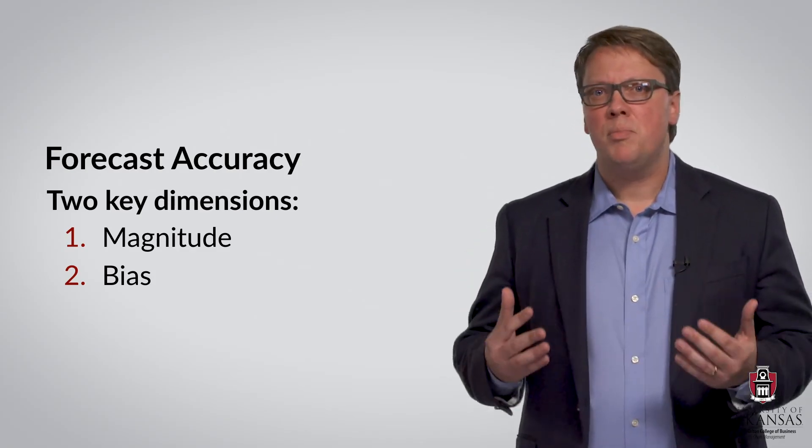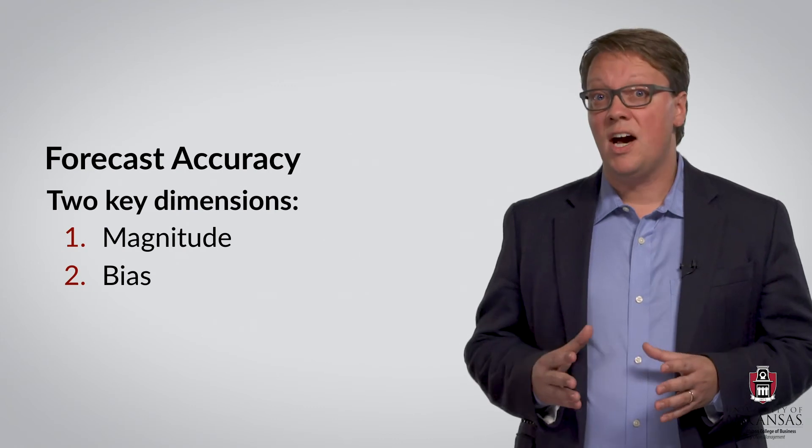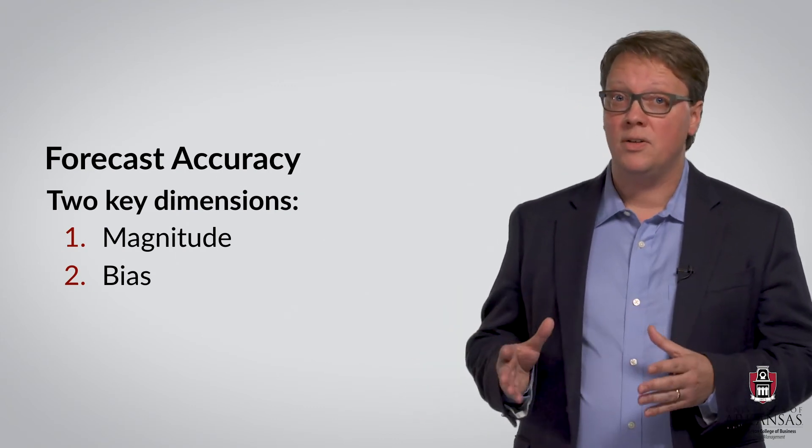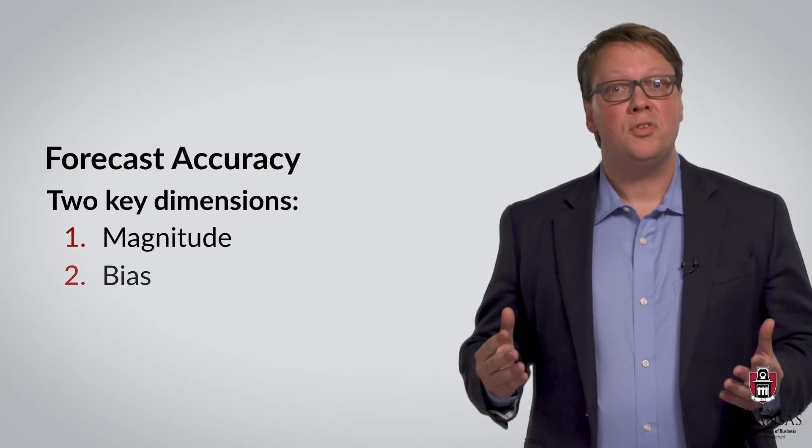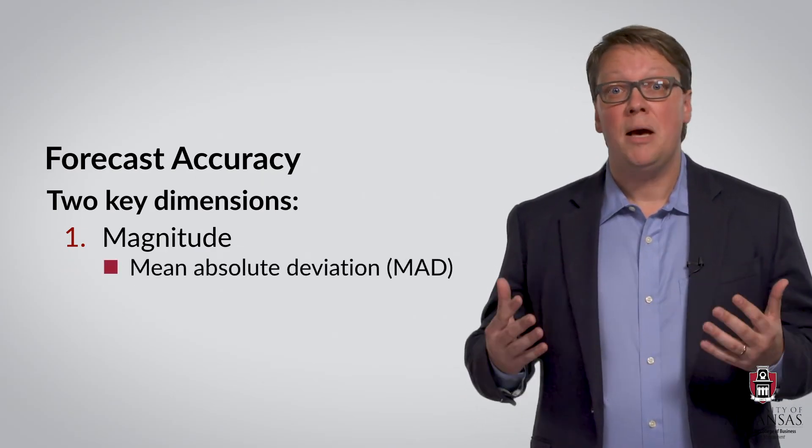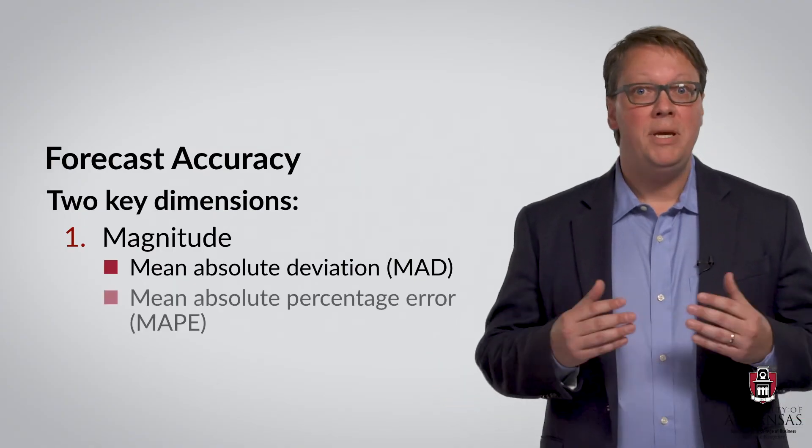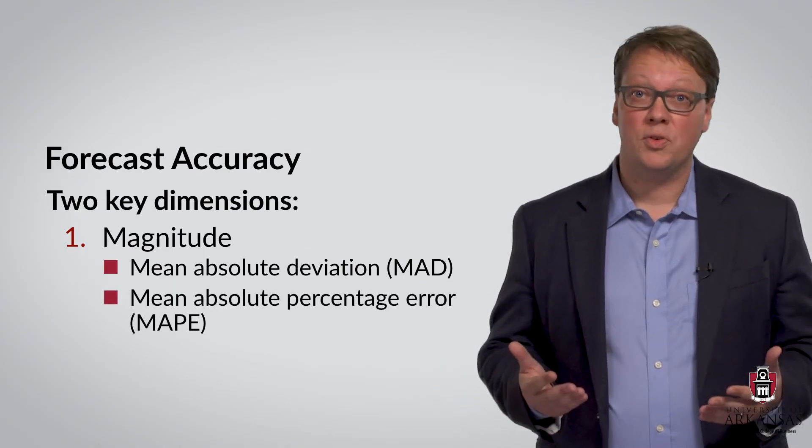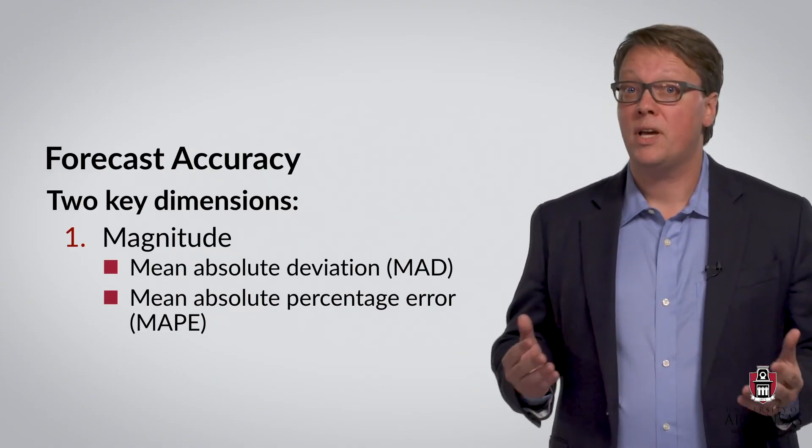There are a number of different forecast accuracy statistics to assess either magnitude or bias in forecast errors. Looking at the measures of magnitude first, there is the mean absolute deviation, as we just discussed. The mean absolute percentage error, also called MAPE, is another measure of the magnitude of forecast errors.